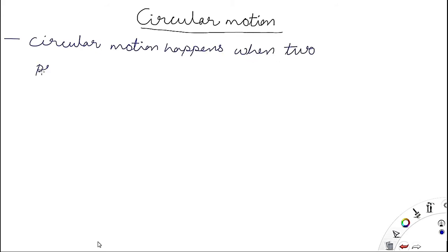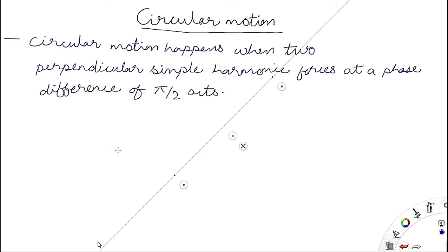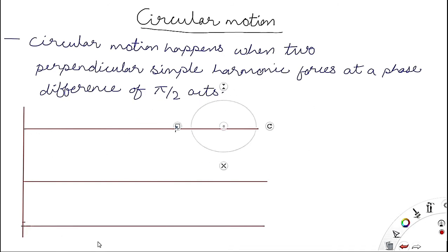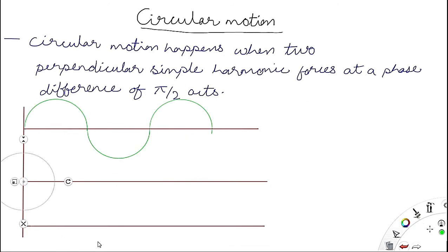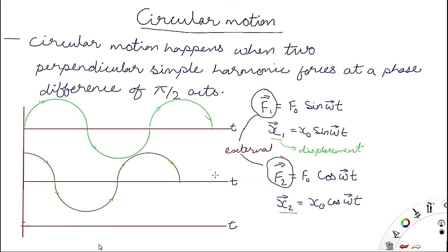After simple harmonic motion, we now study circular motion. Circular motion is a type of simple harmonic motion. Simple harmonic motion is periodic motion — 'harmonic' means periodic. Periodic functions like sine and cosine are used to define simple harmonic motion, and circular motion is a kind of simple harmonic motion represented using sine and cosine curves.